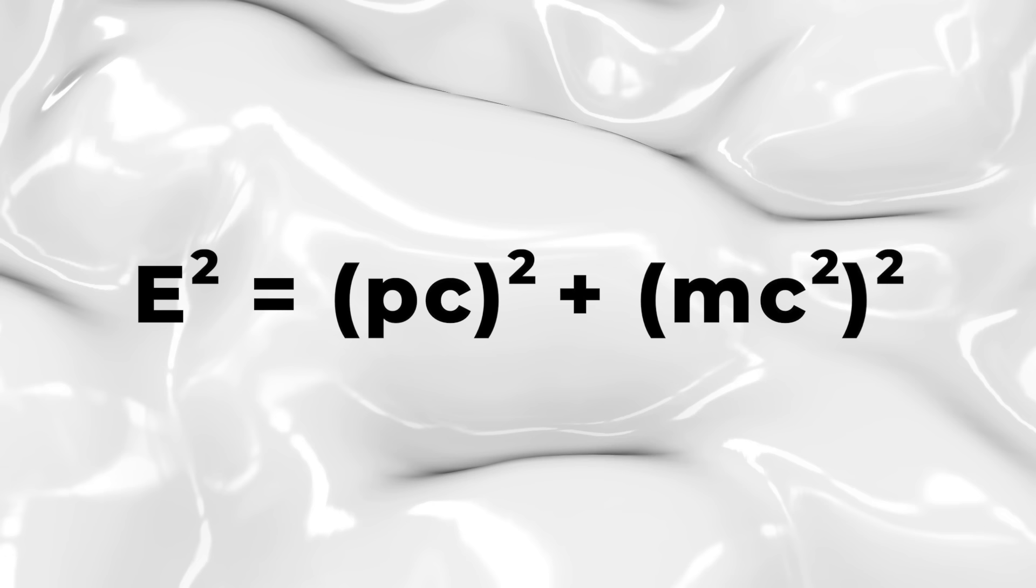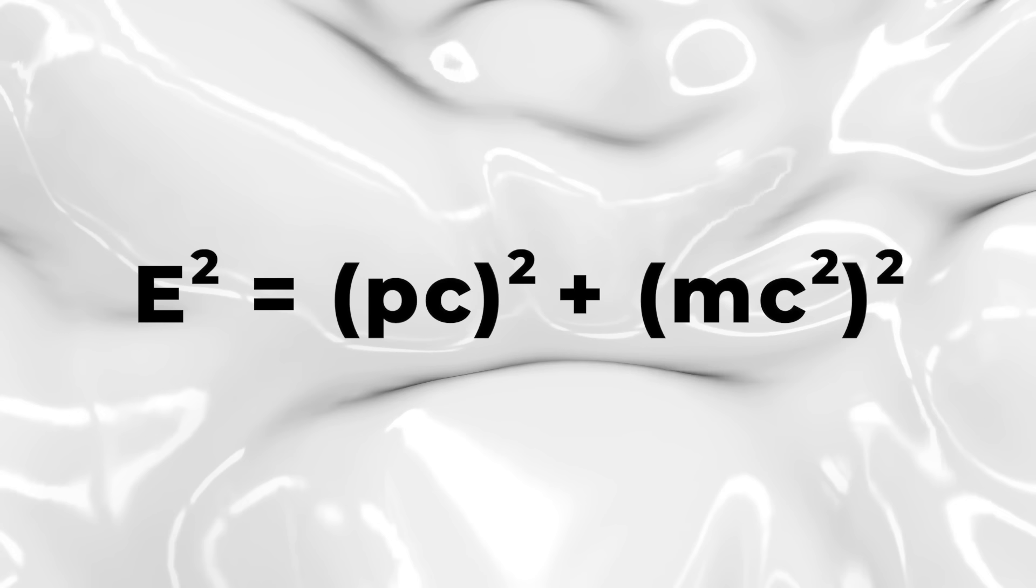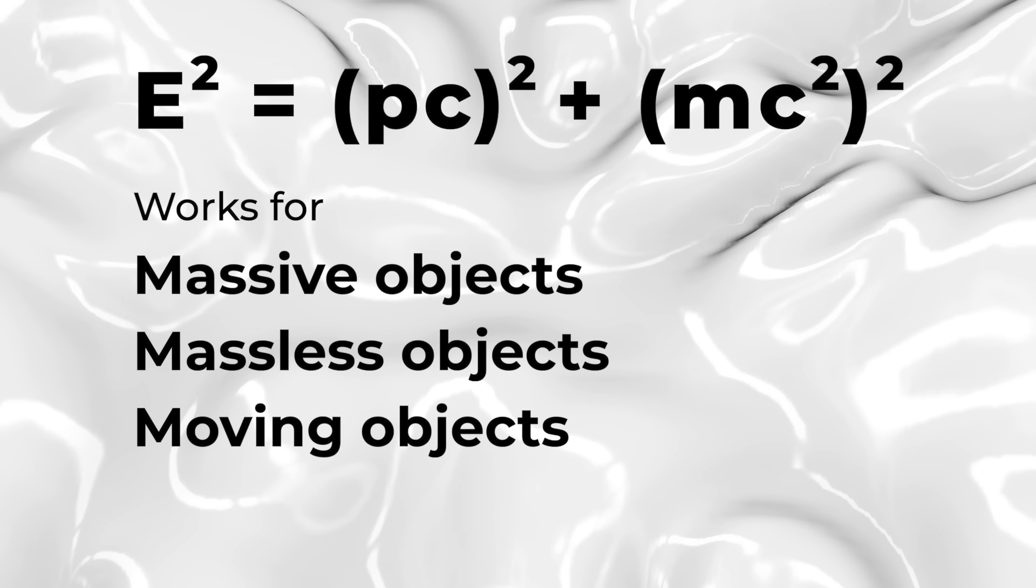This equation is energy squared equals the momentum times the speed of light squared plus the mass of the object times the speed of light squared all squared. E squared equals pc squared plus mc squared all squared. Now this equation works for everything. Massive objects, massless objects, things moving near the speed of light, things moving at the speed of light, and things that are stationary.